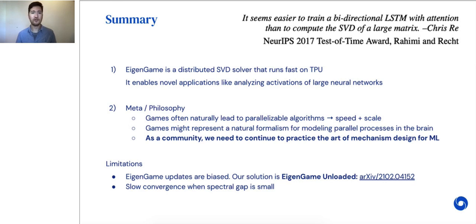We also consider the philosophical implications of this work. Taking a games-first approach to machine learning could naturally lead to parallelizable algorithms, which allow us to exploit the speed and scale of modern compute. We develop close connections between our algorithm and Hebbian learning, suggesting that games might represent a natural way to think about parallel processes in Cortex. Finally, as Ian mentioned earlier, we take the position that as a community, practicing the art of mechanism design is crucial for the continued development of new ideas which push the field forward.